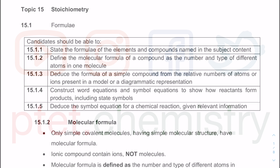Hello again everyone, welcome back to PTED Chemistry channel. This is the beginning of a series of lecture tutorials — the lessons are on chemical formula. This is for the 5129 Combined Science curriculum where I am specifically teaching the chemistry component, which is part of the 14 to 16 years old chemistry component. In the curriculum, Cambridge says candidates should be able to state the formula of elements and the compounds named in the subject content.